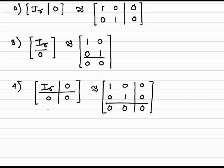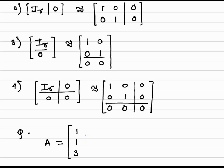To understand this, we solve an example: reduce the following matrix into the normal form and hence find the rank. Consider the matrix A equal to: 1, 1, 3, 1, minus 1, 1, minus 1, 2, 0, 1, minus 1, 1.